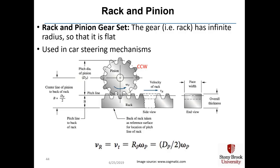In a rack and pinion gear set, the gear — essentially the rack — has infinite radius so it's flat, and the pinion is as before. The pinion rotating counterclockwise causes the rack to move to the right; rotating clockwise moves the rack to the left. Rack and pinion gear sets are commonly used in car steering mechanisms. The linear velocity of the rack equals the tangential velocity, which equals the radius of the pinion times the angular velocity of the pinion.